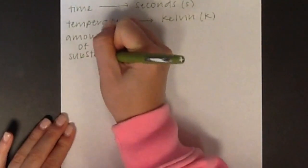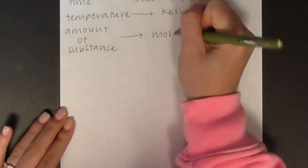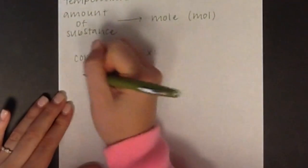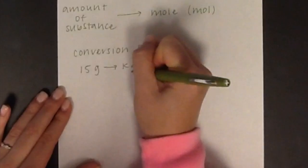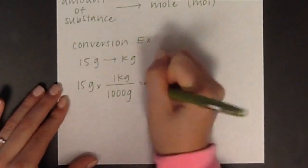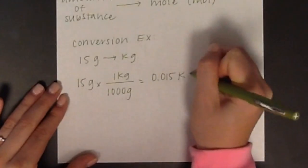Let's do a conversion example. If you have 15 grams and you want to convert to kilograms, then you must divide by 1000 grams to give you 0.015 kilograms. Since we started out with two significant figures, then you should end with two significant figures.